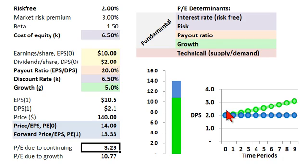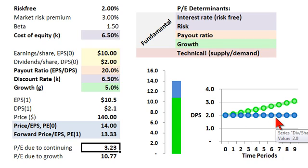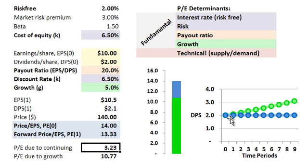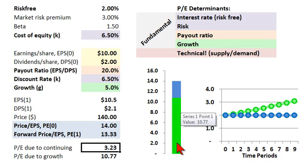Looking at the spreadsheet, I broke the P/E ratio into two pieces. In the graph, the blue bar represents dividends per share held constant at $2 — as if dividends did not grow — and in green is the growth in dividends per share. The P/E due to continuing dividends is computed by simply capitalizing those constant dividends by dividing by the discount rate, which gives a P/E of 3.23. The rest I attribute to growth in dividends — the green bar. So the P/E multiple of 14 breaks into two components: the smaller portion from in-place ongoing dividends, and the larger growth expectations. This 14 multiple really embeds a lot of expectation for growth.